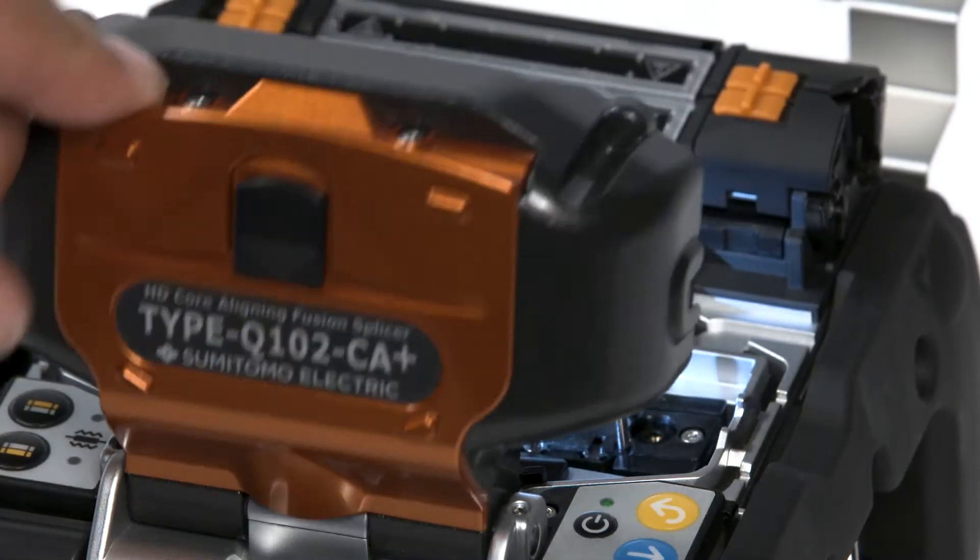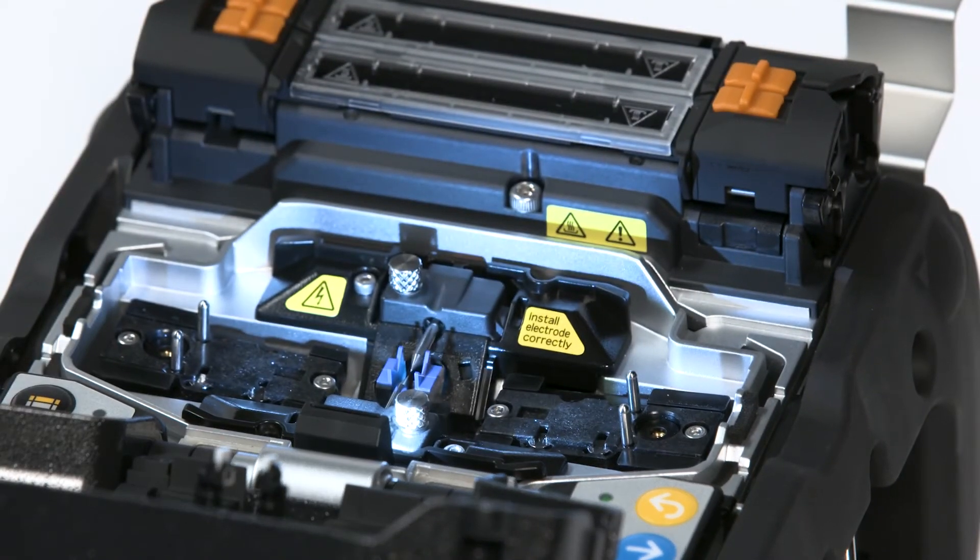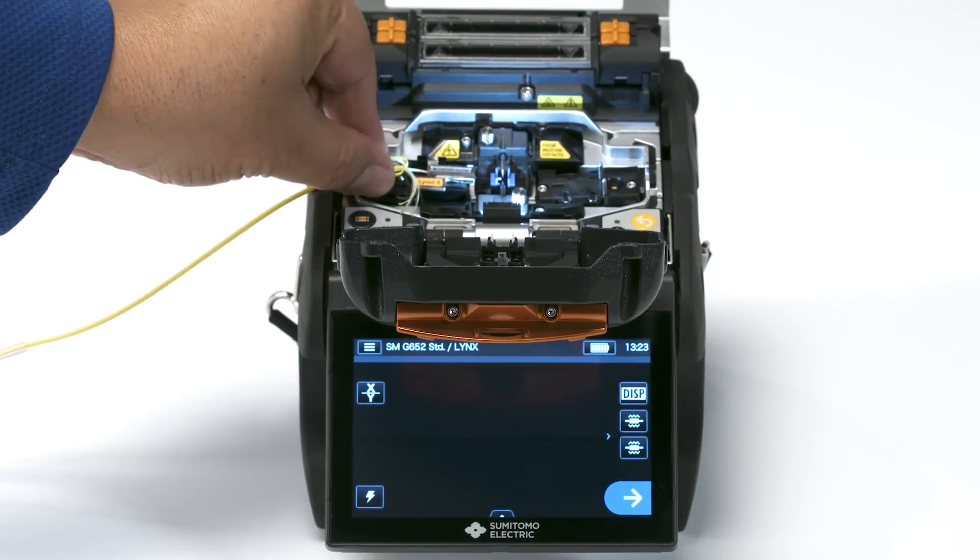Prepared fiber should be immediately placed into the fusion splicer to keep the fiber from collecting dust or incurring damage.